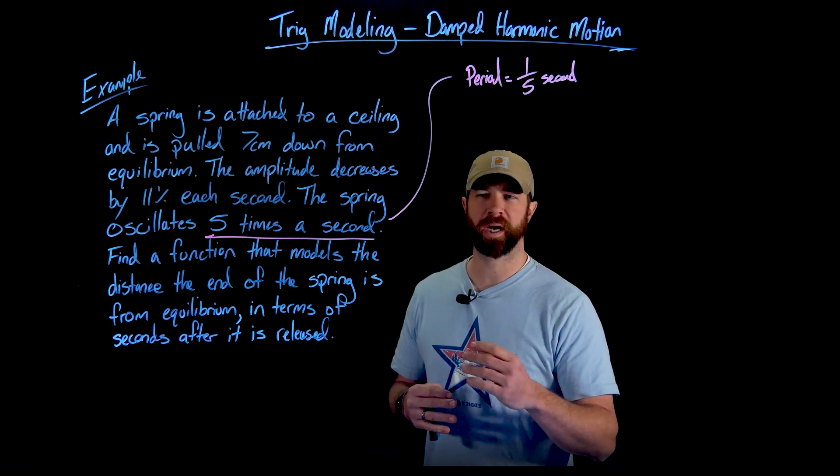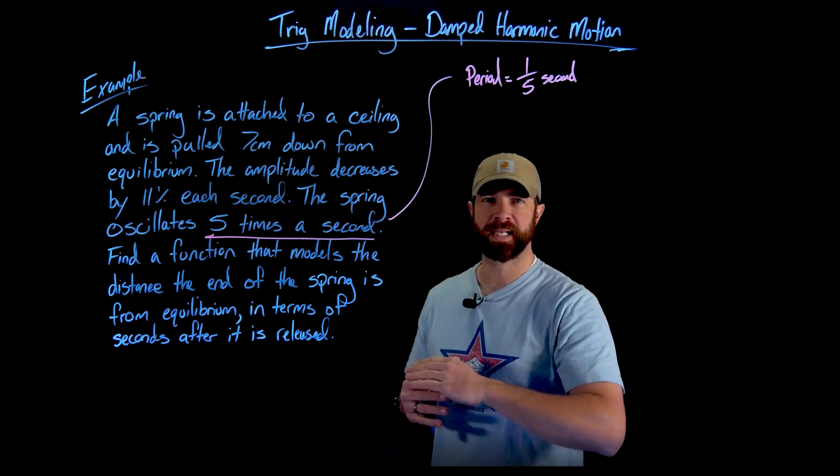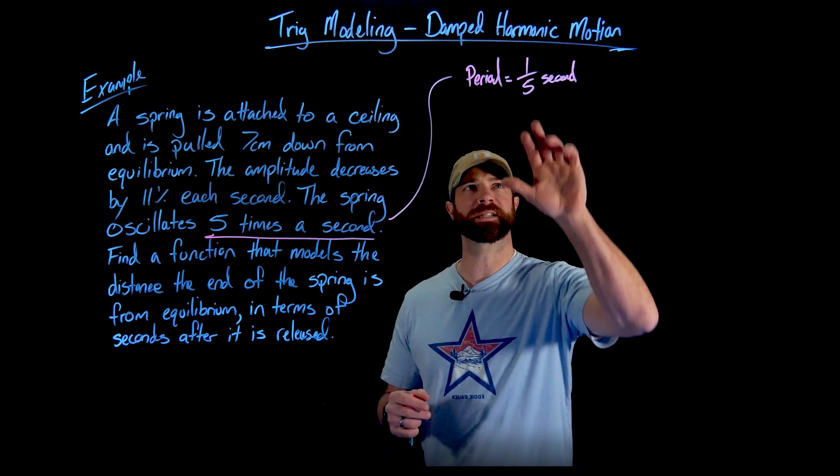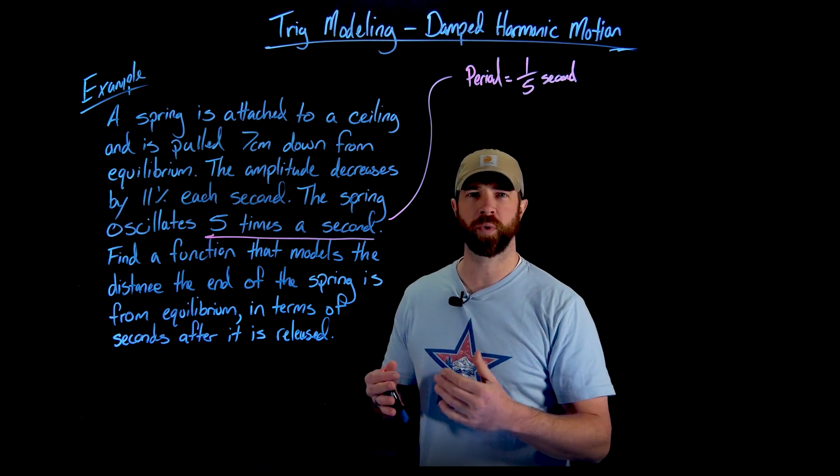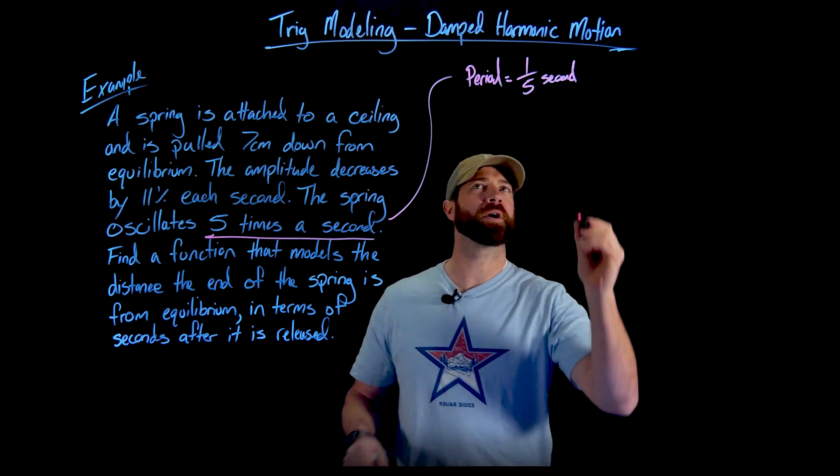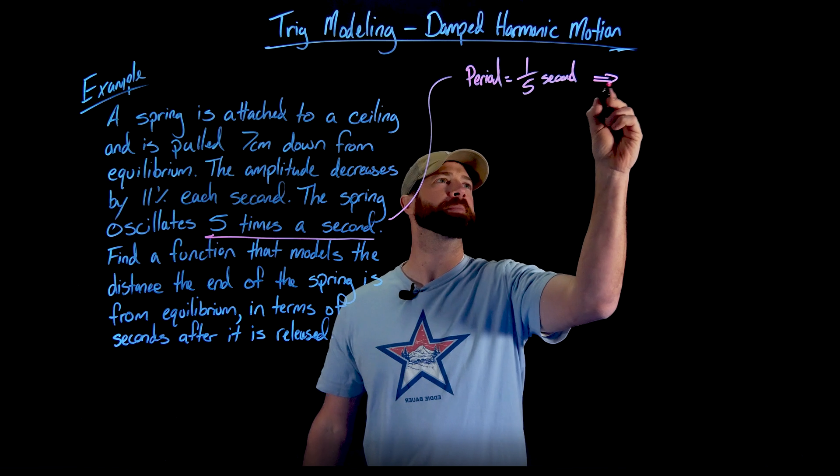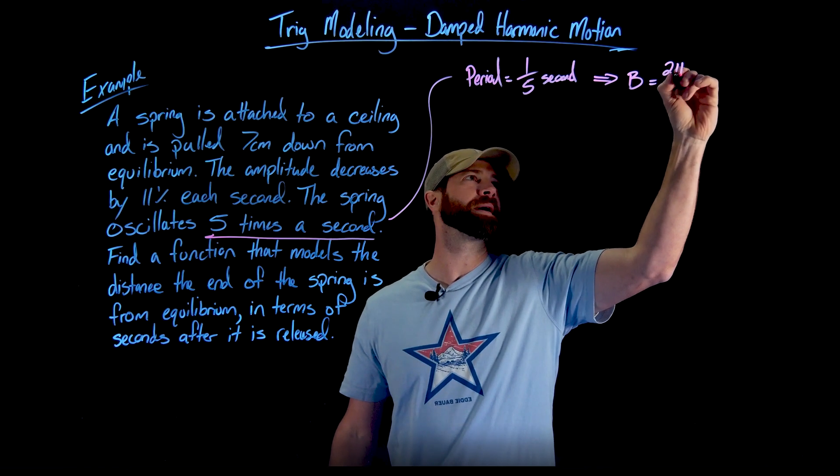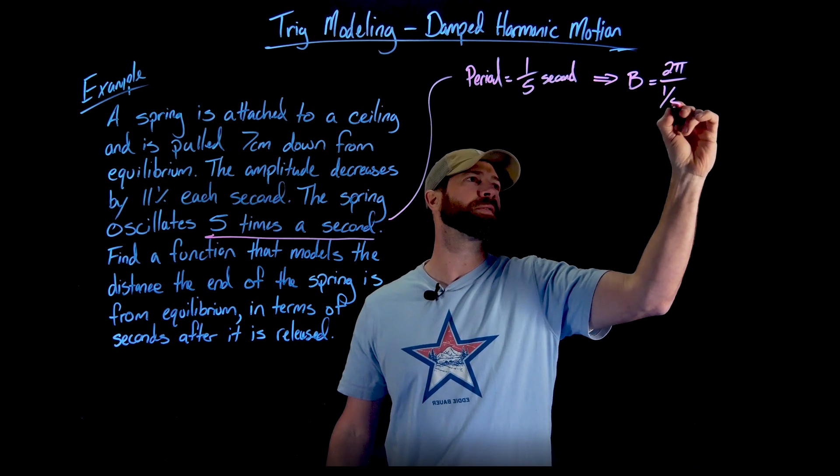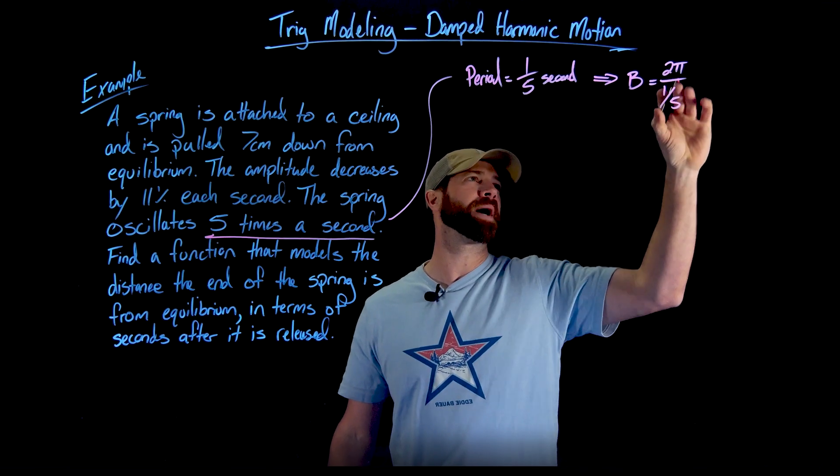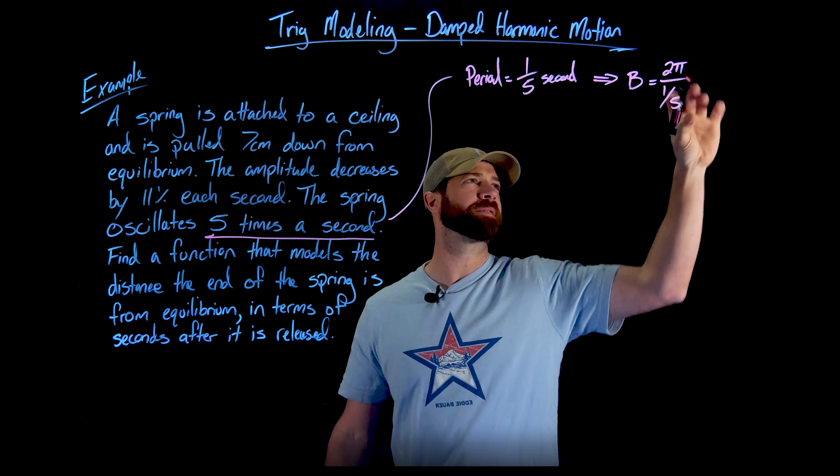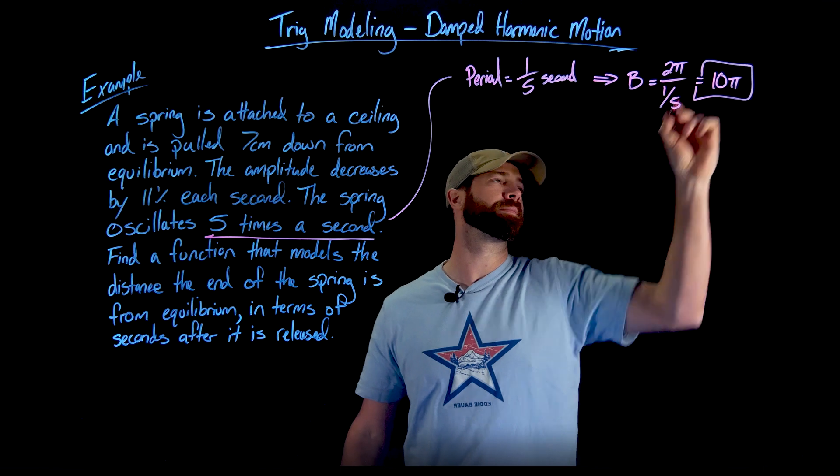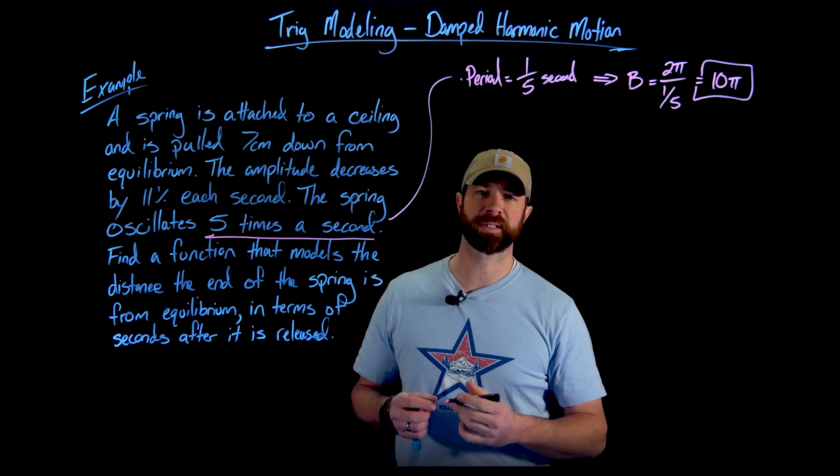So importantly when we're interpreting this right here, if it oscillates five times per second, the period or one oscillation would be one fifth of a second. To repeat that, the way that I'm interpreting this is the fact that it says this goes through five periods per second, that means then that it takes a fifth of a second to complete one period. And we know that if we know the period we can find the B value: B equals 2π divided by our period here of one fifth. When we take 2π and divide it by one fifth, we flip and multiply to get 10π.